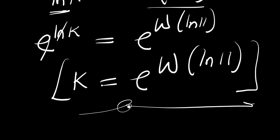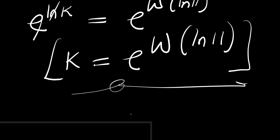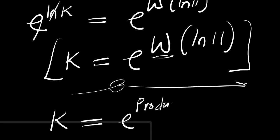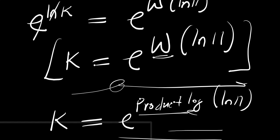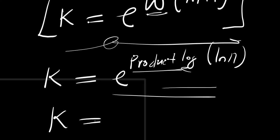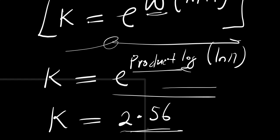You should not be surprised, because if you insert this into a calculator — k equals e raised to the power of the Lambert W function of ln of 11 — you might see it displayed as 'product log' of ln of 11. The Lambert W function may appear as 'product log' in your calculator. When you compute it you are going to get the accurate value of k, which is 2.56.